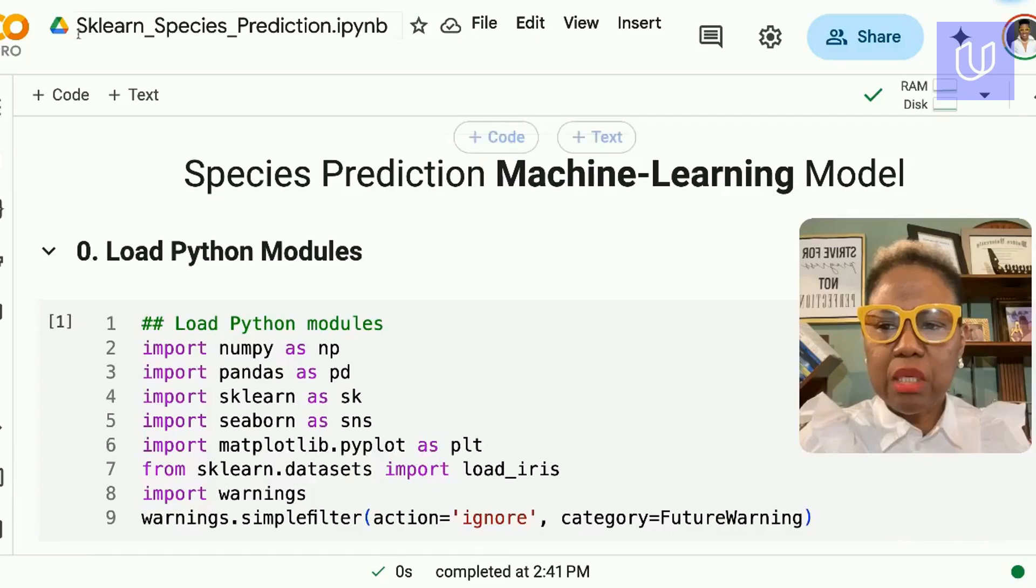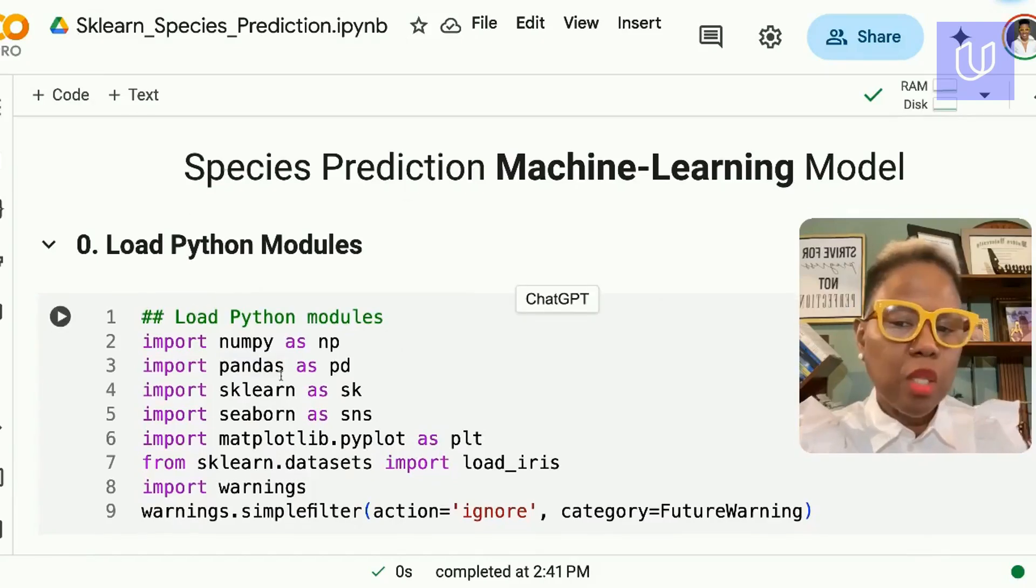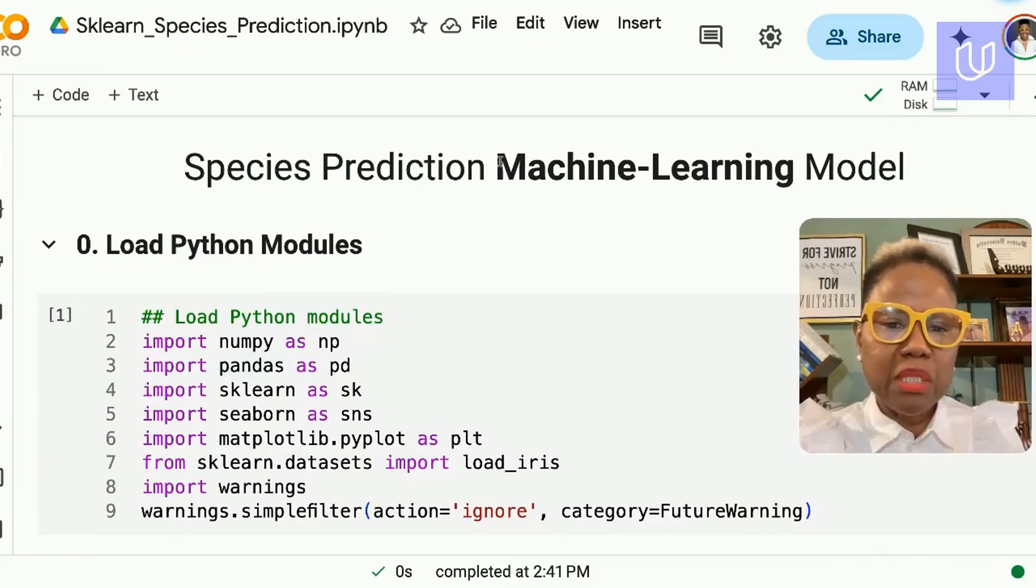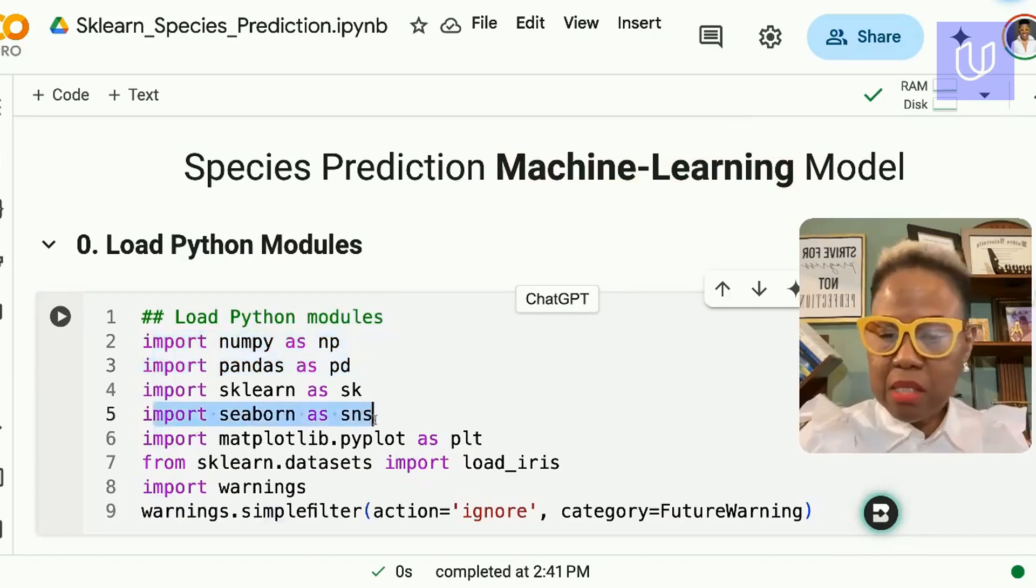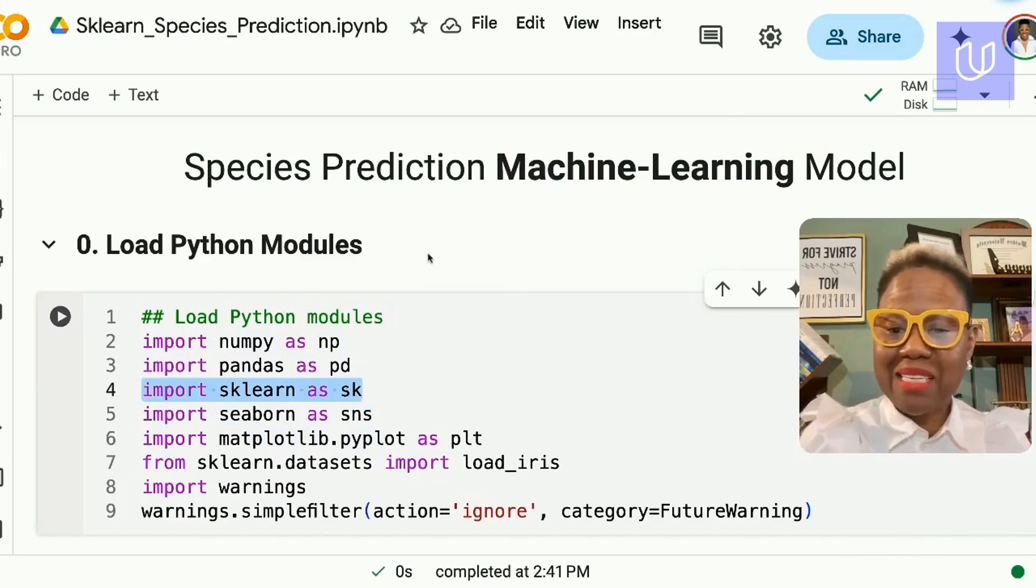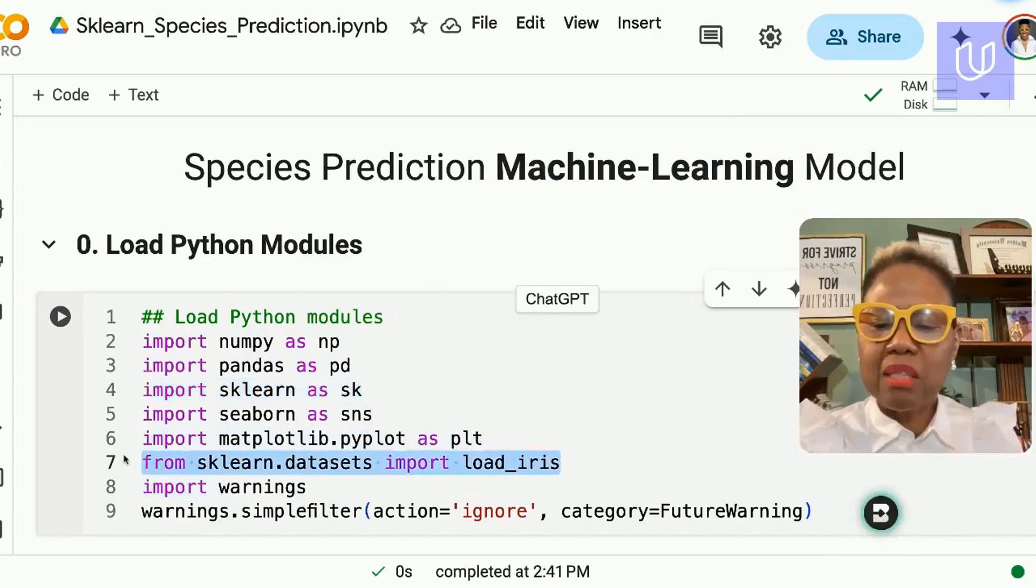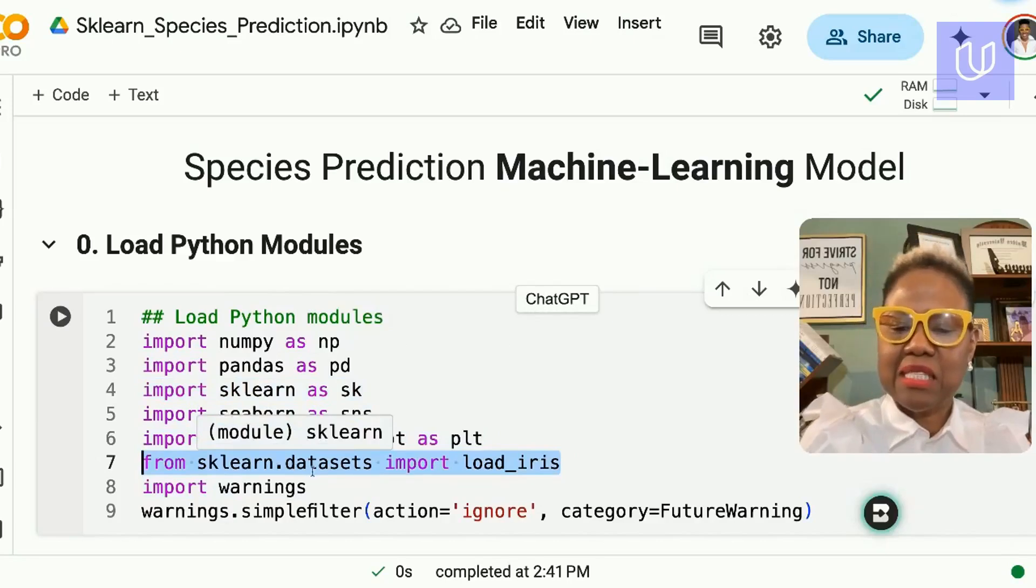So here we are inside of the IPython notebook, Google Colab. And I start by loading in all of the modules that I would need for building my prediction machine learning model. NumPy and Pandas and Seaborn and Matplotlib. But most importantly, we need sklearn because that is the machine learning module. We're also going to get the built-in datasets in sklearn.